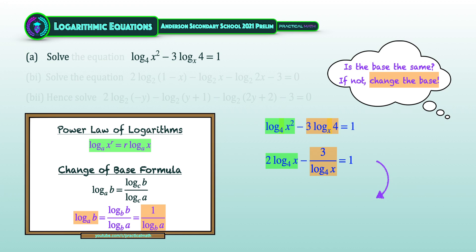Next, we multiply by log x to the base of 4 throughout the equation to give us a quadratic equation involving log x to the base of 4. For those who cannot tell it is a quadratic equation, we can substitute log x to the base of 4 equal to k, giving us 2k squared minus 3 equal to k.